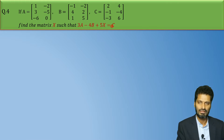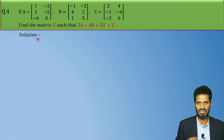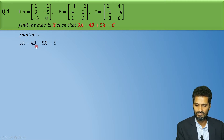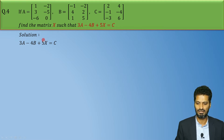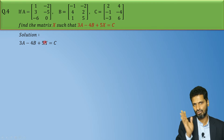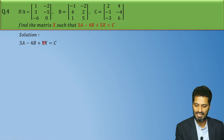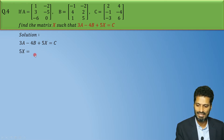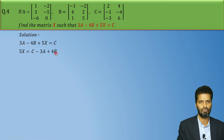Very easy question. So without wasting any time, let's quickly begin with the solution. First of all, we are given this equation: 3A minus 4B plus 5X equals C. What we need to find is matrix X. So 5X will remain on the left-hand side, and the right-hand side will be C minus 3A plus 4B.